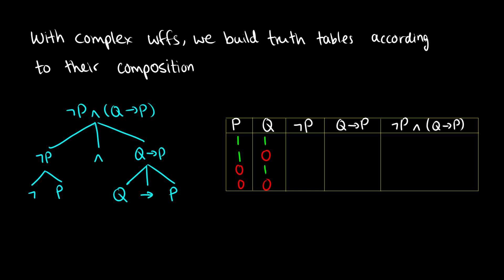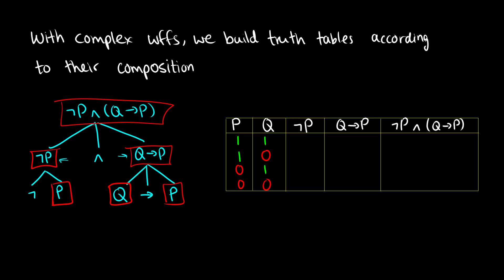When we build a complex well-formed formula, we compose it according to syntactic rules, and we can build a truth table according to that. Every time we have a well-formed formula, we need a column for it. So we need a column for all the values of p, all the values of q, and a column for not p — because we're taking p and applying the negation. We also need a column for q arrow p, and we need these two columns — not p and q arrow p — in order to find the truth value of not p and q arrow p.